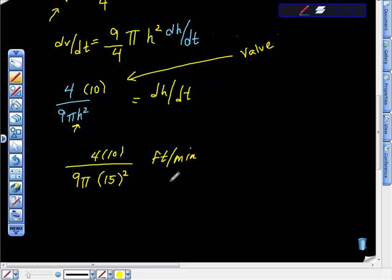This numerically is the right answer. This is a calculus test, not an arithmetic test. But if you do this—I think it comes out to be about 8 over 405 pi per minute.